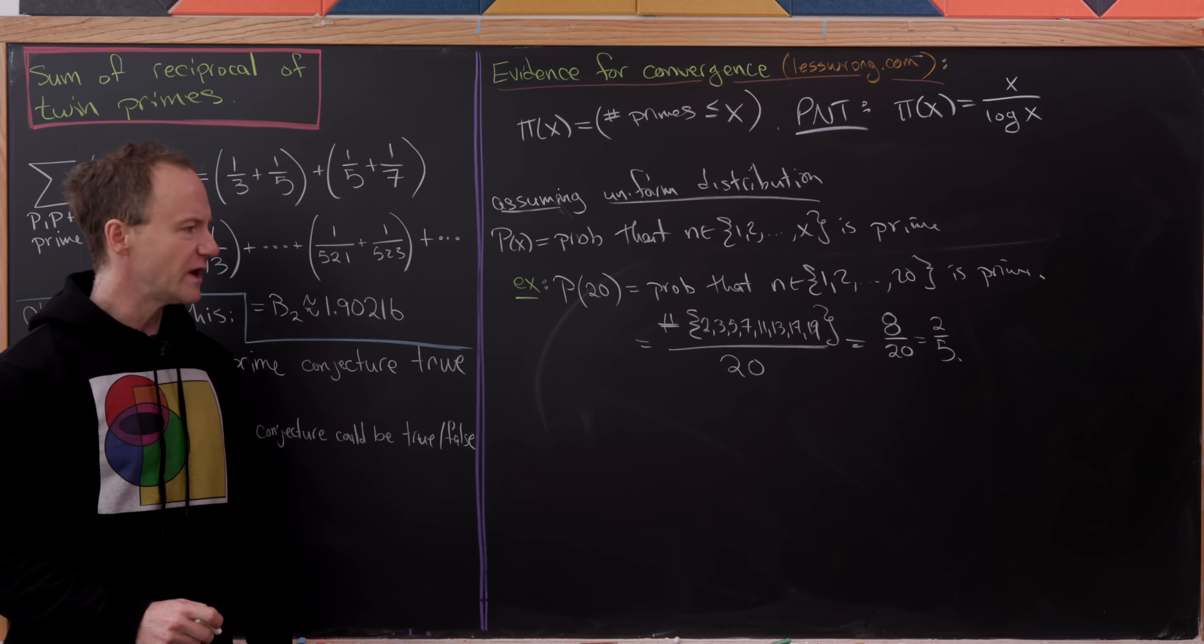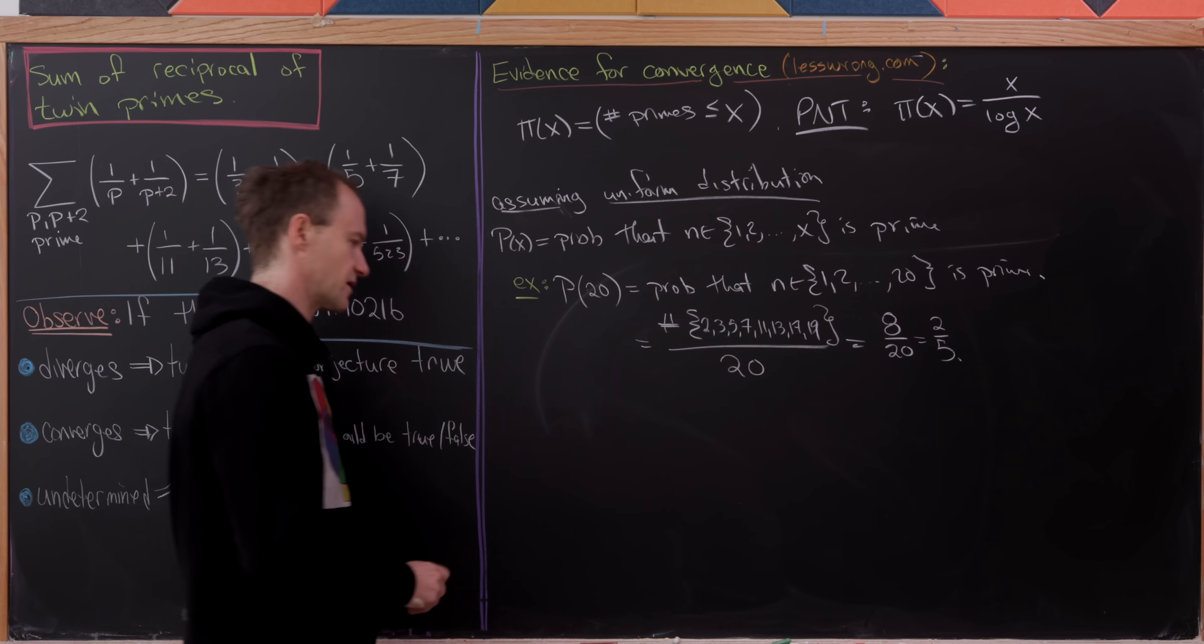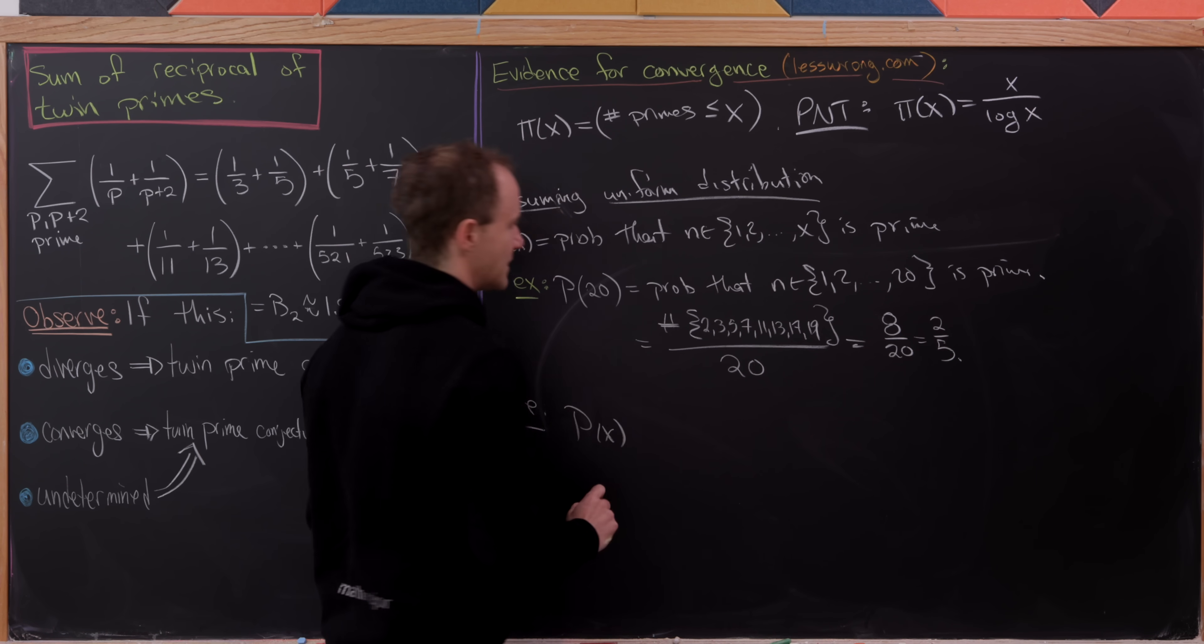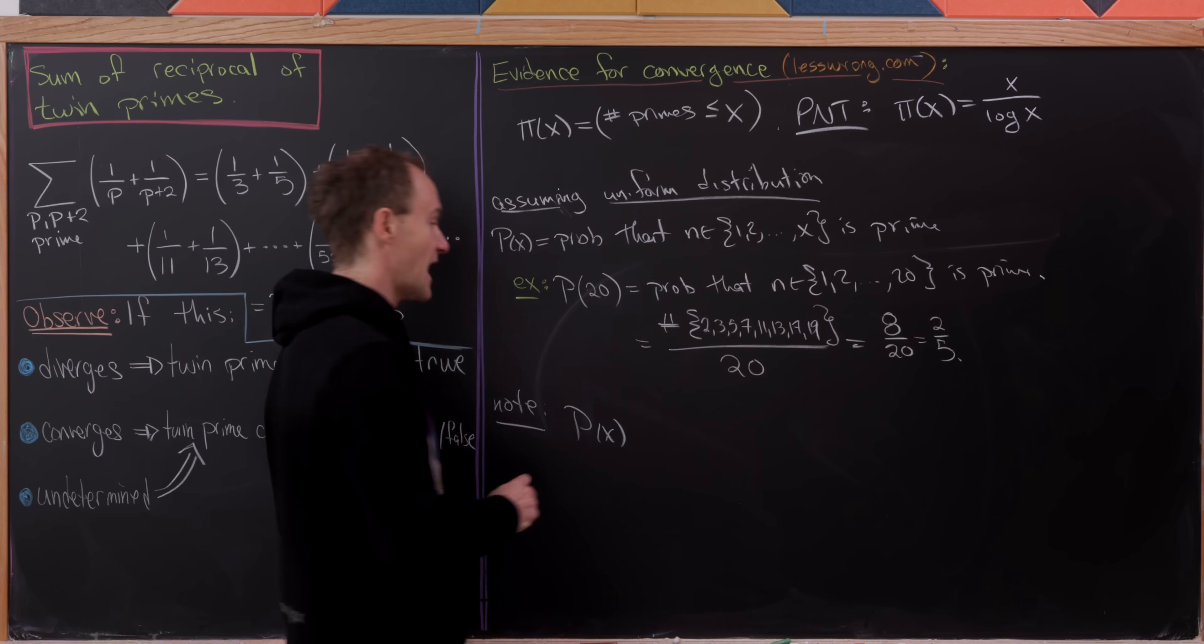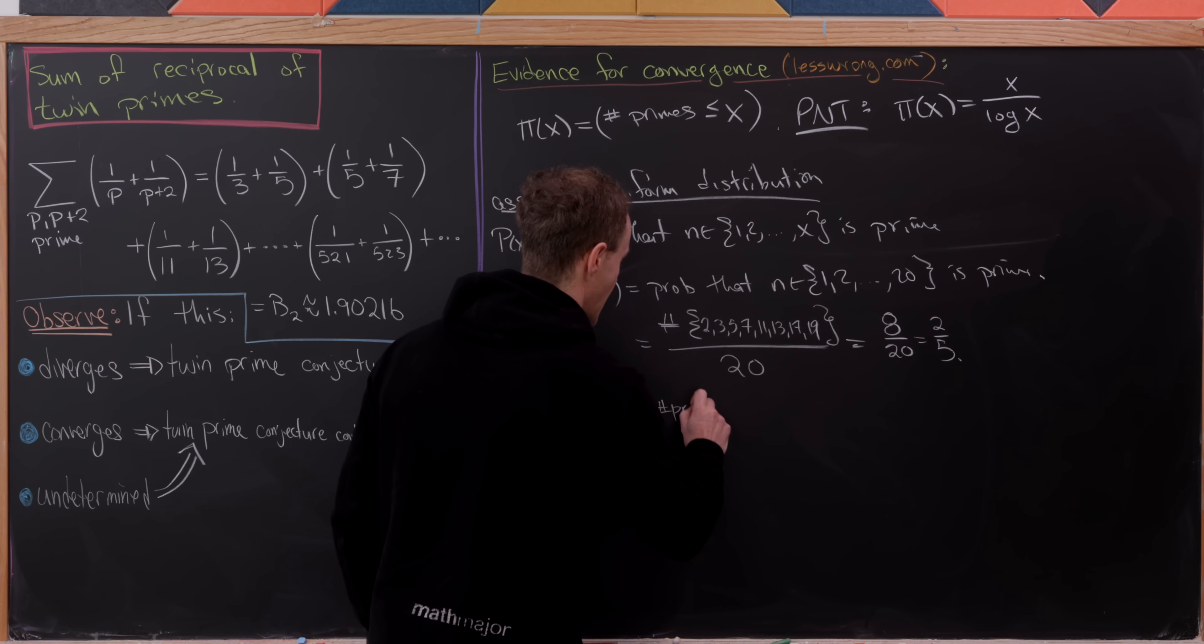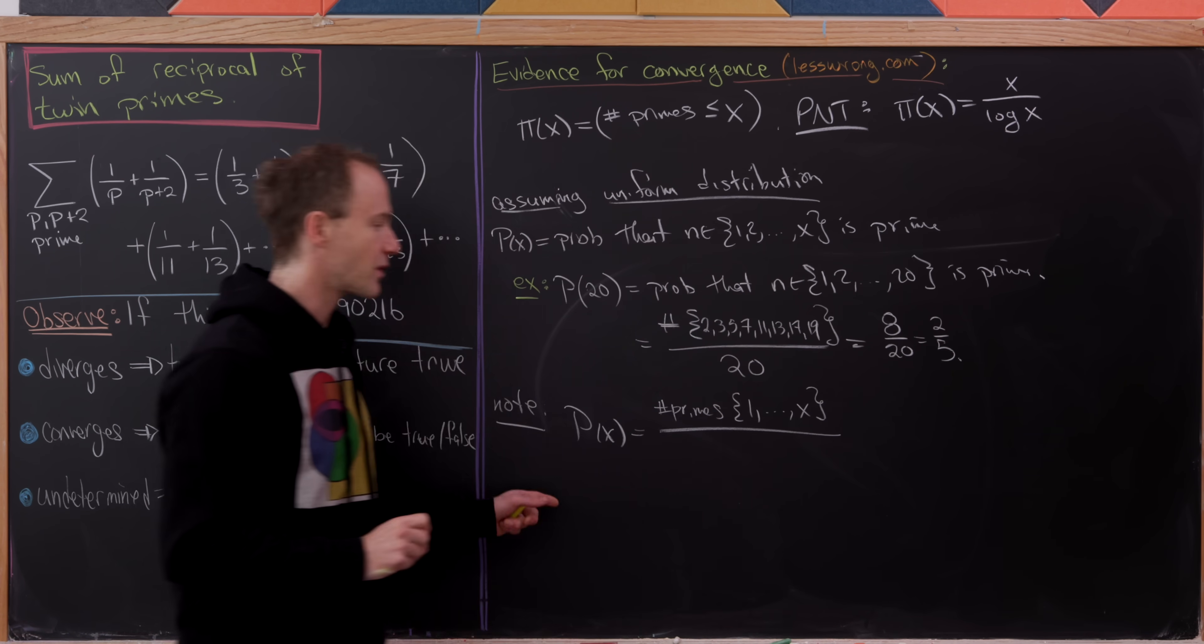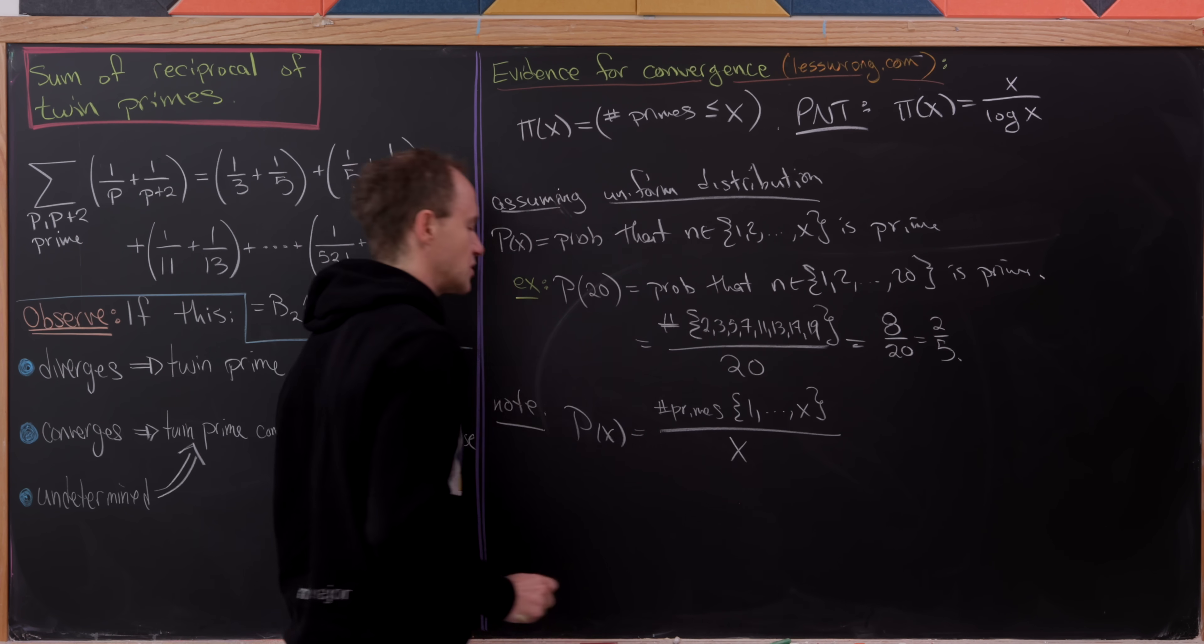But what we really want is P(x) kind of arbitrarily. So let's maybe note, again sort of making some assumptions and assuming that everything works out nicely, that P(x) will be the number of primes on the set 1 to x over the number of elements in the set 1 to x. But that's just simply equal to x.